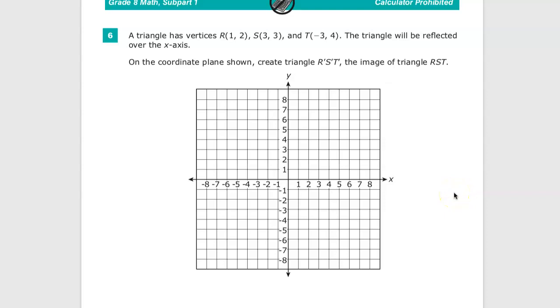Welcome. This is the grade eight math practice test for TN Ready, question number six of this version. A triangle has vertices R(1, 2), S is at (3, 3), and T is at point (-3, 4). The triangle will be reflected over the x-axis.